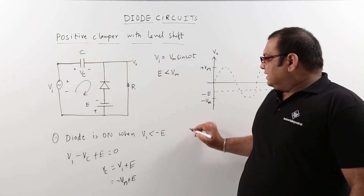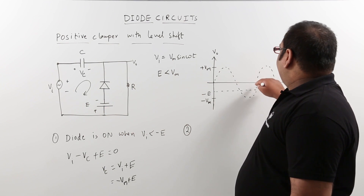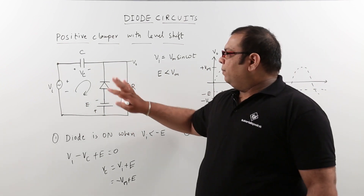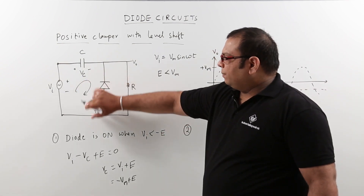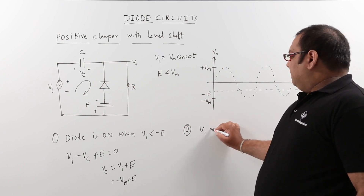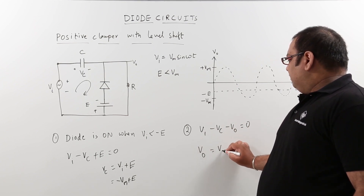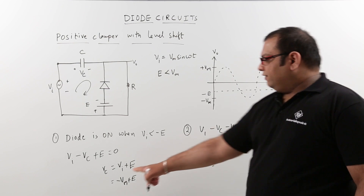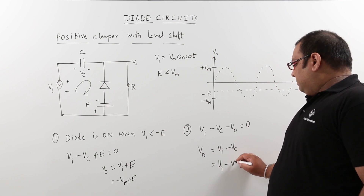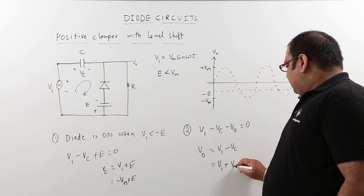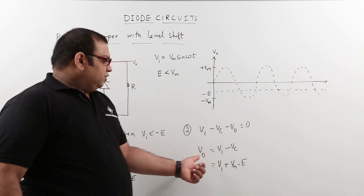The second step is to calculate the output voltage. From the next period onwards the diode will be open. When the diode is open, the equation is Vi minus Vc minus V0 equals 0, so V0 equals Vi minus Vc. Since Vc equals minus Vm plus E, substituting gives V0 equals Vi plus Vm minus E.